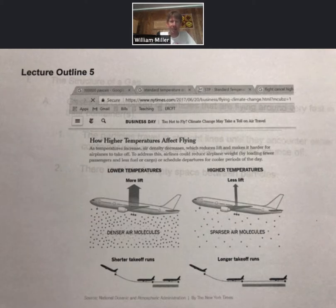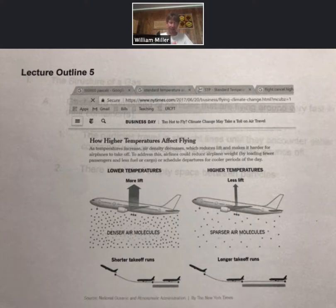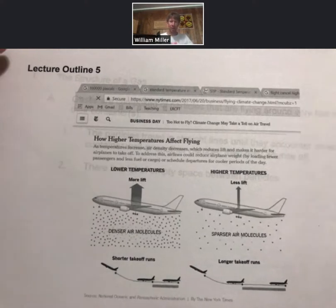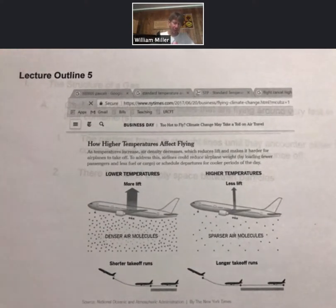Lecture outline 5. This is a lecture outline entirely about gases in the gas phase and we're going to start with an example from an article I pulled from the New York Times about how higher temperatures affect flying of airplanes.